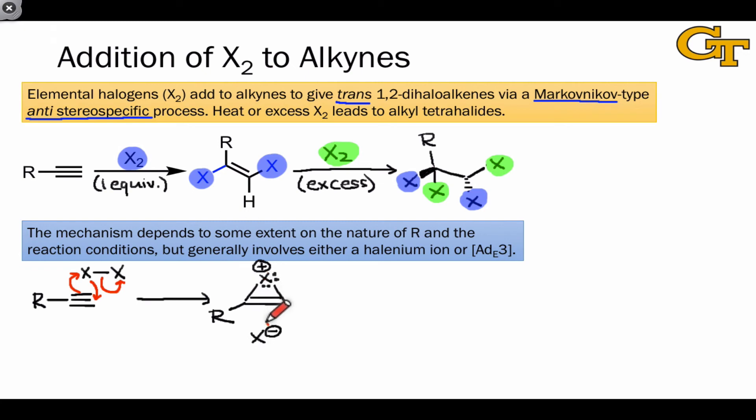In the second step of the mechanism, X- generated in the first step adds in an SN2 fashion to the intermediate. Because this occurs with inversion of configuration or via backside attack, we end up with a situation where the first X atom is anti or trans to the second X atom added across the alkyne.